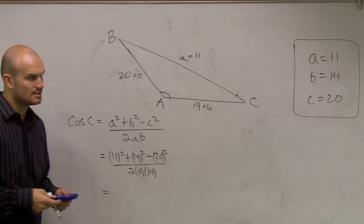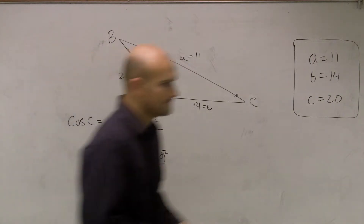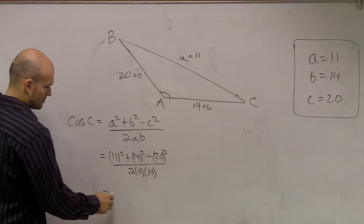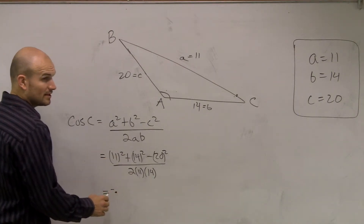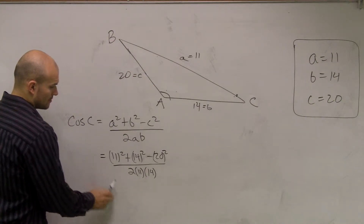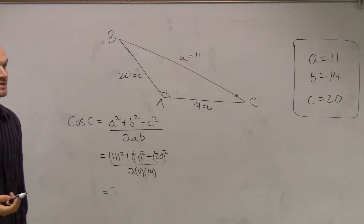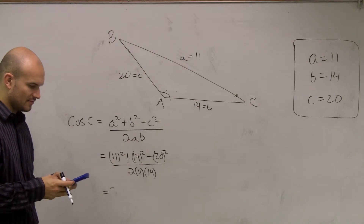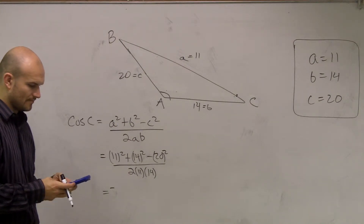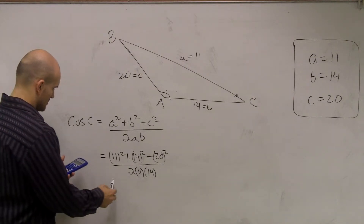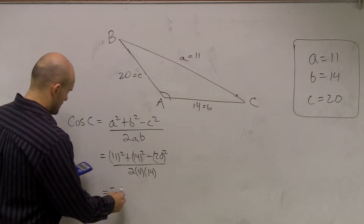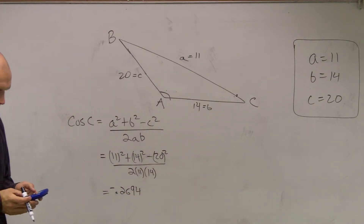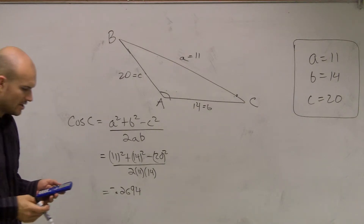When we compute that, we get negative 83 over 308, which equals negative 0.27. And then taking the inverse cosine of that, we get 105.63 degrees.